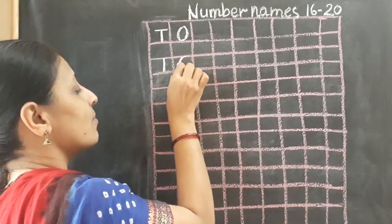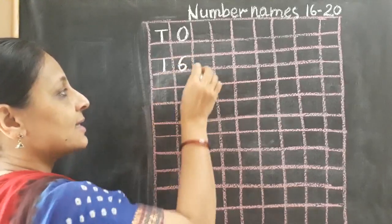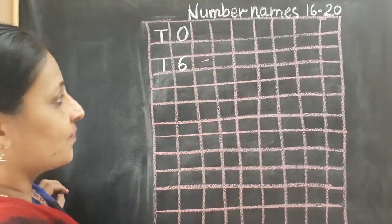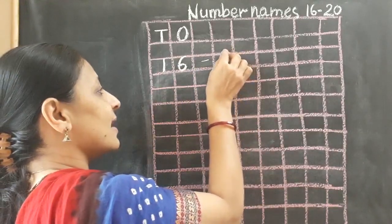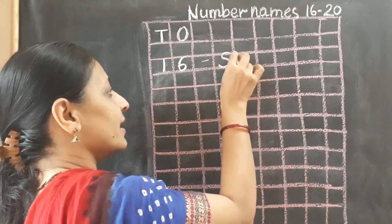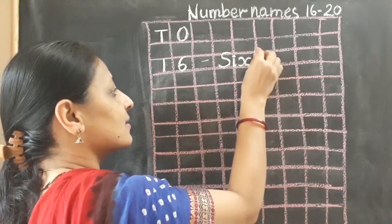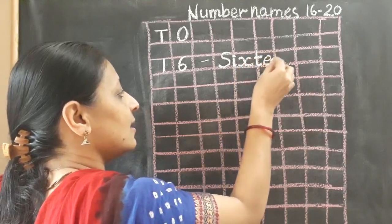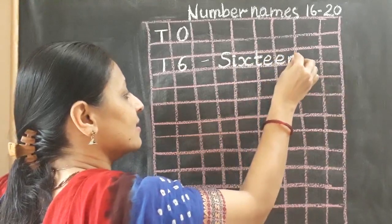Here I am going to write number 16. Now I will write the spelling of 16. What is the spelling of 16? S, I, X, T, E, E, N. Sixteen.